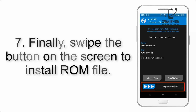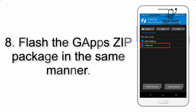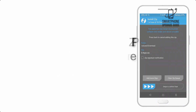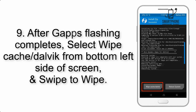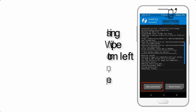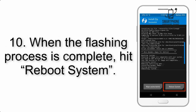Step 7: Swipe the button on the screen to install the ROM file. Step 8: Flash the G apps zip package in the same manner. Step 9: After G apps flashing completes, select Wipe Cache and Dalvik from the bottom left side of the screen and swipe to wipe.